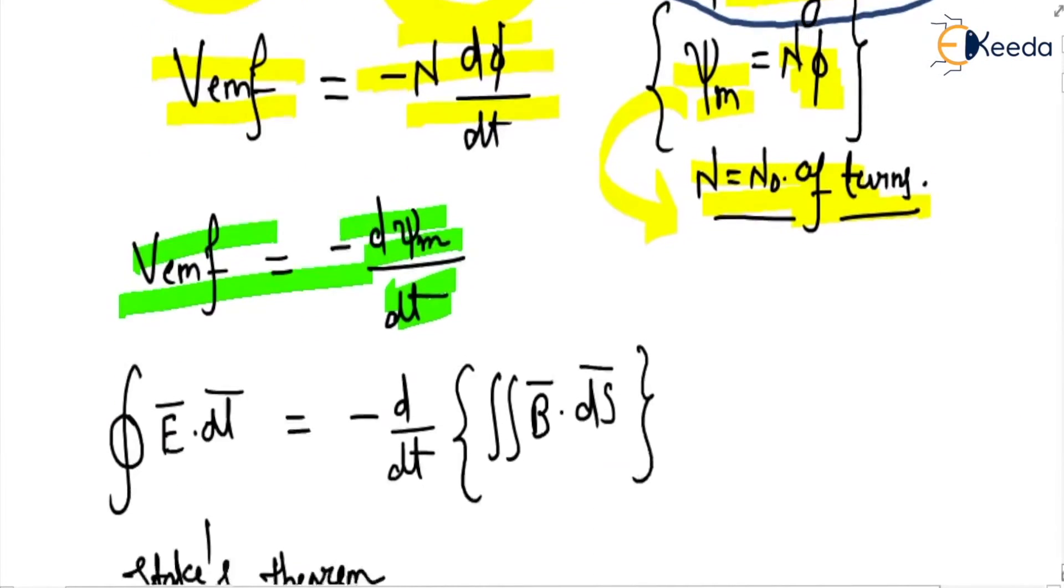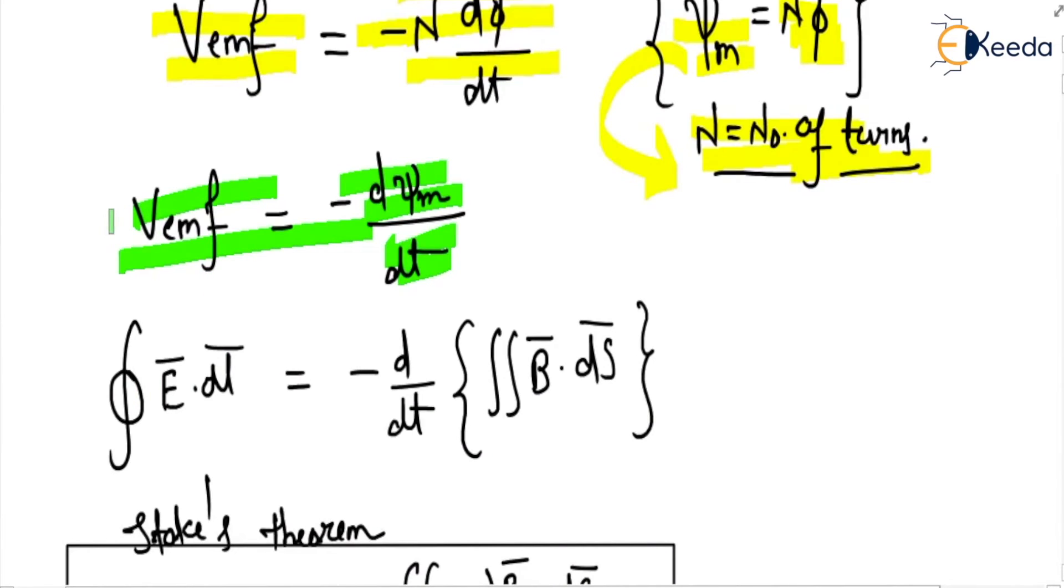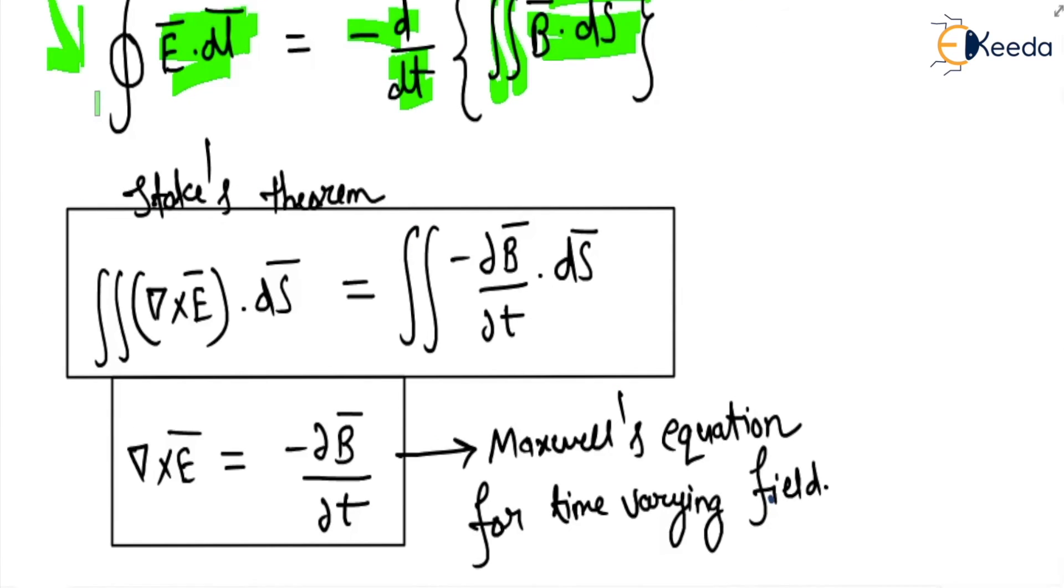And if the path is closed then emf can be written as circulation of E vector dot dl vector. It is minus d over dt and double integration B vector dot ds vector. Now we use Stokes theorem and according to the Stokes theorem this line integration will be converted into the surface integration.